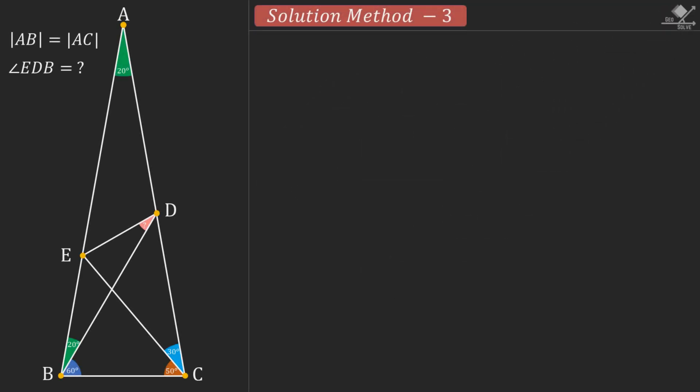This time we will have another geometric solution to Langley's problem. First, let's draw an auxiliary line from point C, dividing the 30-degree angle into 20 and 10 degrees.